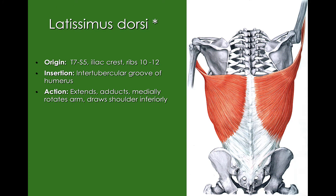Another posterior big muscle we have is our latissimus dorsi. We have this giant origin running from T7 down to S5, our iliac crest, and our ribs 10 through 12. That insertion comes up onto our intertubercular groove of our humerus. Again, large origin, small insertion, lots of power. Let's digest this for a little bit — work with some of your models, look at some of your diagrams, and start working through these really big muscles.